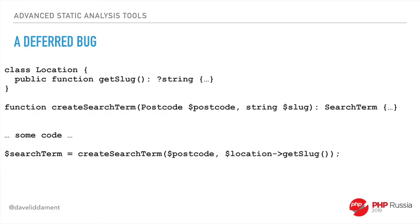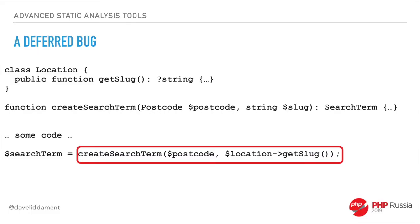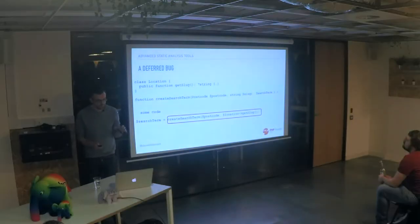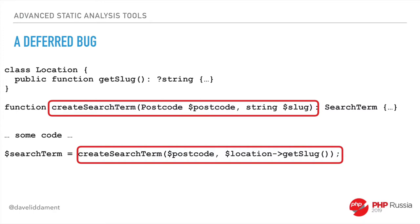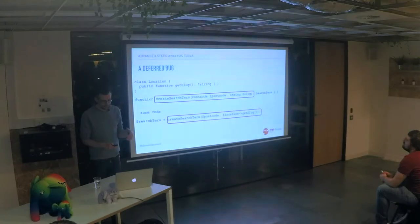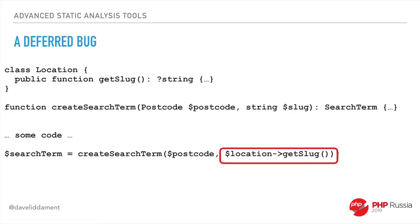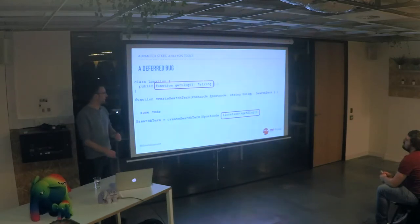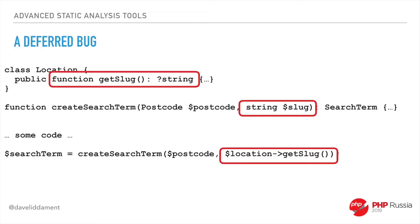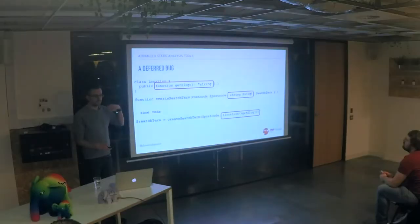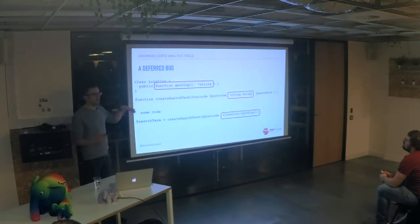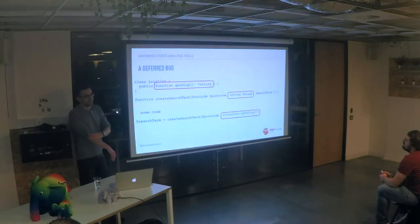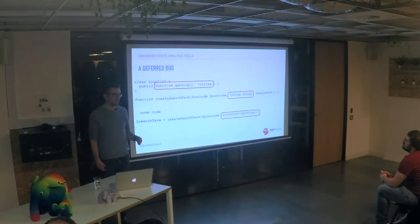A deferred bug: we're calling createSearchTerm passing postcode and location->getSlug(). The function requires a postcode value object and a string slug. But getSlug returns either a string or null — so there's a possibility slug will be null, and createSearchTerm is expecting a string. If null comes in, this will crash. To work out how we ever got into this state with locations is quite a thorny problem. Of course, if I had been running static analysis from the start, I would have seen that issue immediately and it would have been much easier to fix.